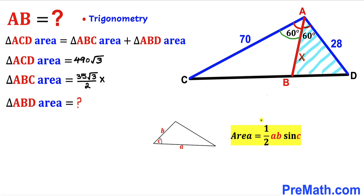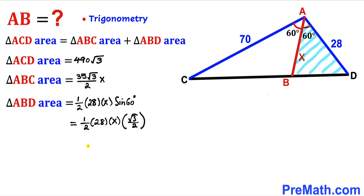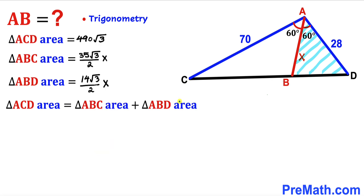Finally, let's focus on triangle ABD and calculate its area using the same formula. The side lengths are x and 28, and the angle between them is 60 degrees. So Area(ABD) = ½ × 28 × x × sin(60°). Since sin(60°) = √3/2, this simplifies to 14√3/2 × x.